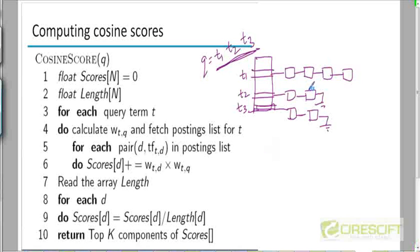Recall that we used to store the term frequency along with the postings — each posting consists of a doc ID, and you can also store the term frequency of T1 in each of those documents along with the doc IDs. Now instead of term frequencies, we are going to store the TF-IDF weights, or we can compute the TF-IDF weights on the fly. For simplicity, let's assume that the TF-IDF weights are stored along with each doc ID.